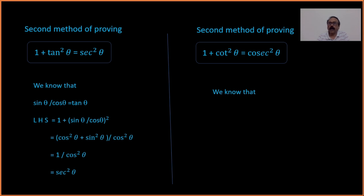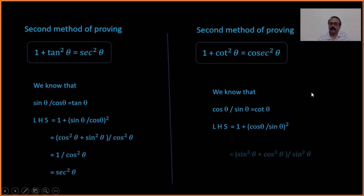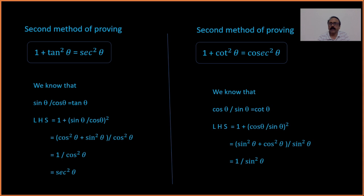Similarly, we know cotθ = cosθ/sinθ. Writing the left-hand side 1 + cot²θ gives 1 + cos²θ/sin²θ. The common denominator is sin²θ, so the numerator becomes sin²θ + cos²θ = 1. Therefore it becomes 1/sin²θ = cosec²θ. This is the second method of proving the second and third identities by using the first identity, substituting tanθ = sinθ/cosθ and cotθ = cosθ/sinθ.